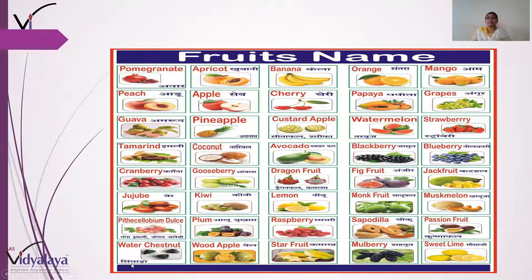Water chestnuts, yaani singhada — jo aap khate ho na, usko bolte hain water chestnut. Apricot, yaani khubaani. Apple, yaani seb. Pineapple, yaani ananas. Coconut, yaani nariyal. Gooseberry, yaani aamla.